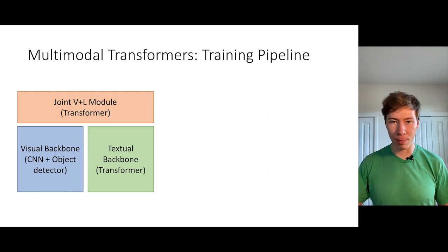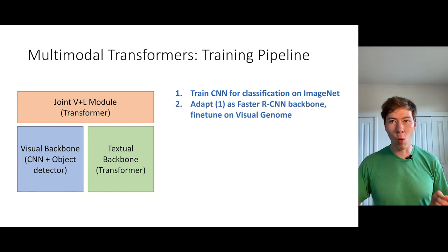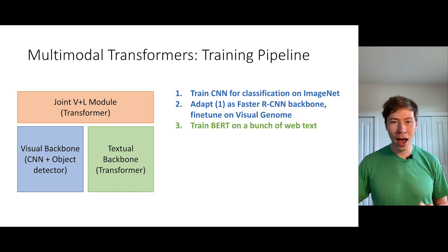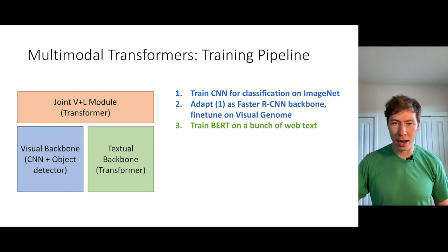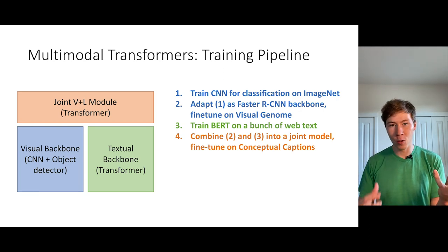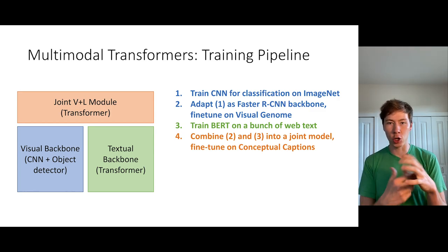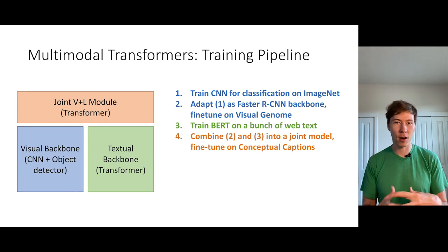There's a common training pipeline to all these multimodal transformer methods. First, they train the visual backbone for classification on ImageNet. Then they plug it into Faster RCNN and train an object detection model on the Visual Genome dataset. After that, they pre-train a BERT model for textual understanding on a bunch of unlabeled text data. Then they take the resulting object detector and the resulting BERT model, combine them into a joint image-language transformer, and fine-tune that on the Conceptual Captions dataset.